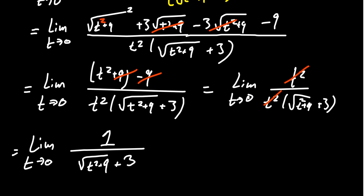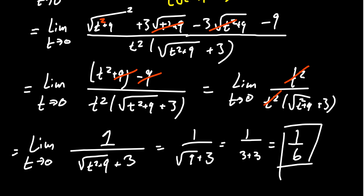Now as t goes to zero, we no longer have a problem plugging in t equals zero. The numerator is just one. In the denominator, we get the square root of nine plus three, which is three plus three equals six. So the answer is one over six. Because we simplified the difference quotient, we were able to evaluate the limit. If you ever have a limit of a difference quotient involving a square root, rationalize the numerator by multiplying by the conjugate.